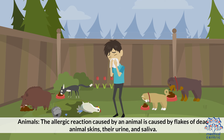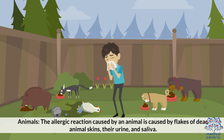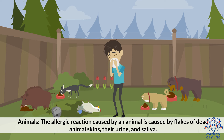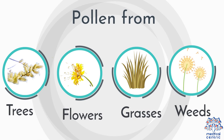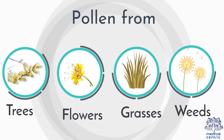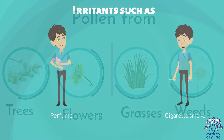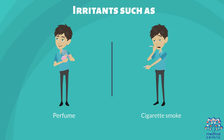Animals: The allergic reaction caused by an animal is due to flakes of dead animal skin, their urine, and saliva. Other common allergens include pollen from trees, flowers, grasses, and weeds, as well as irritants such as perfume and cigarette smoke.